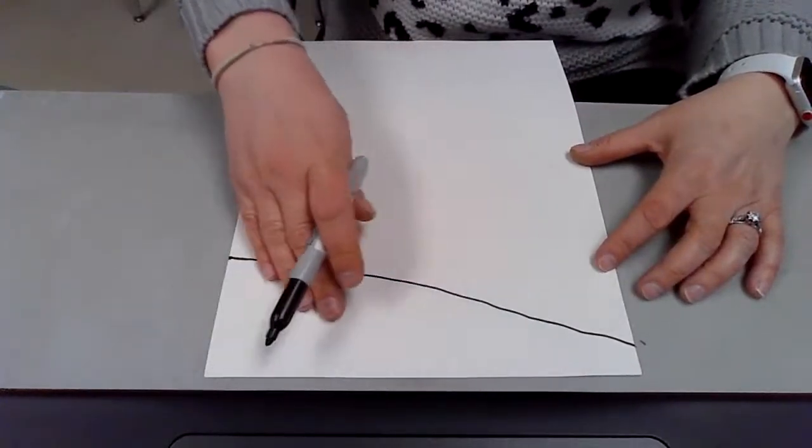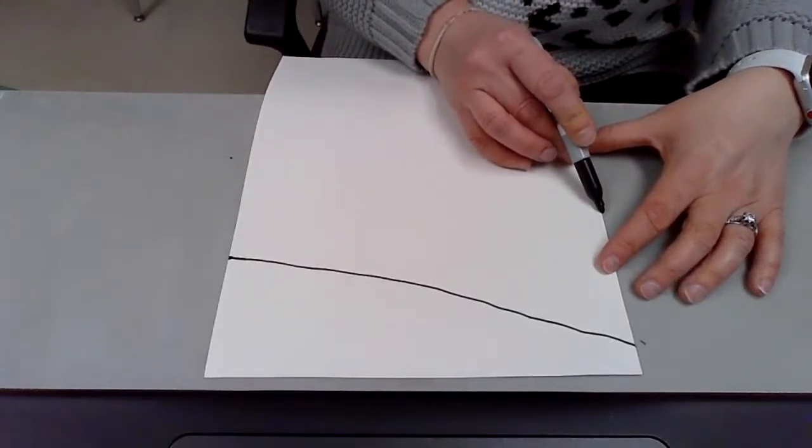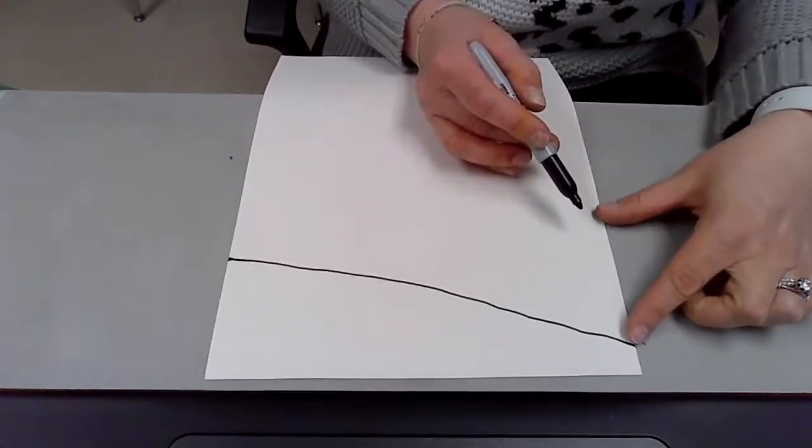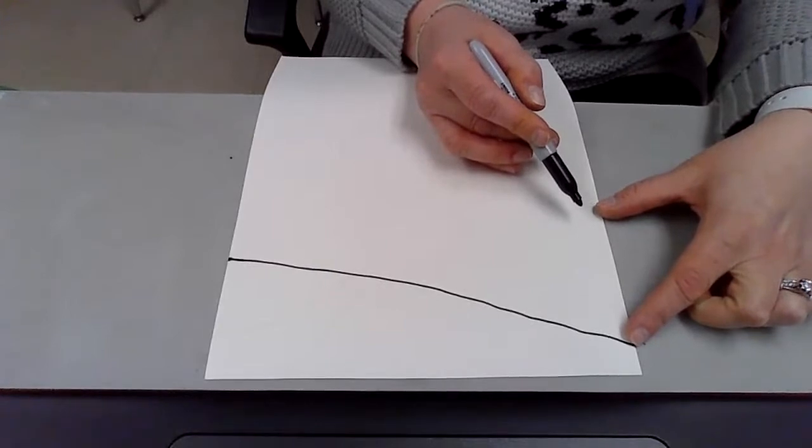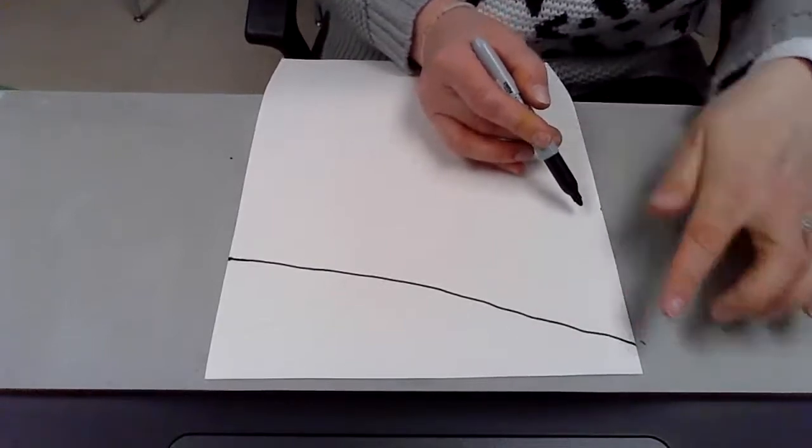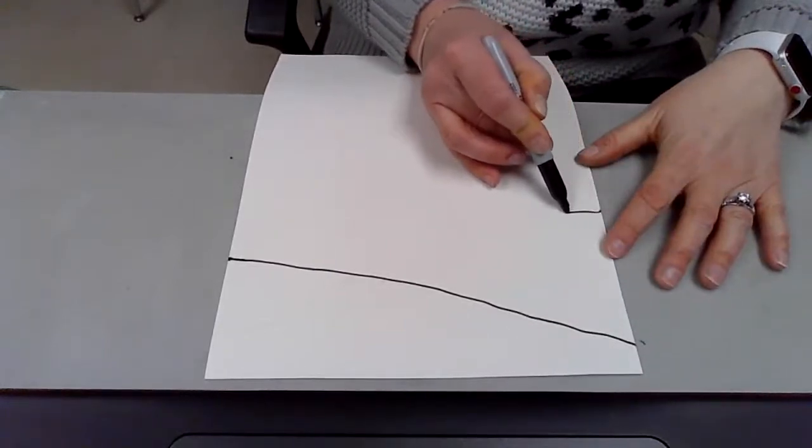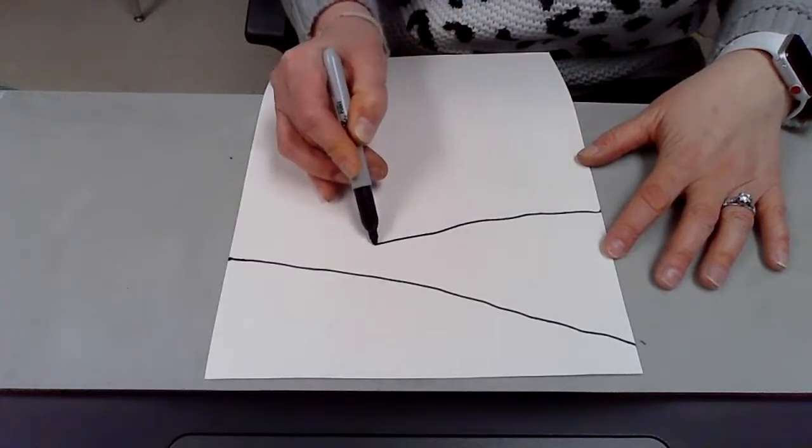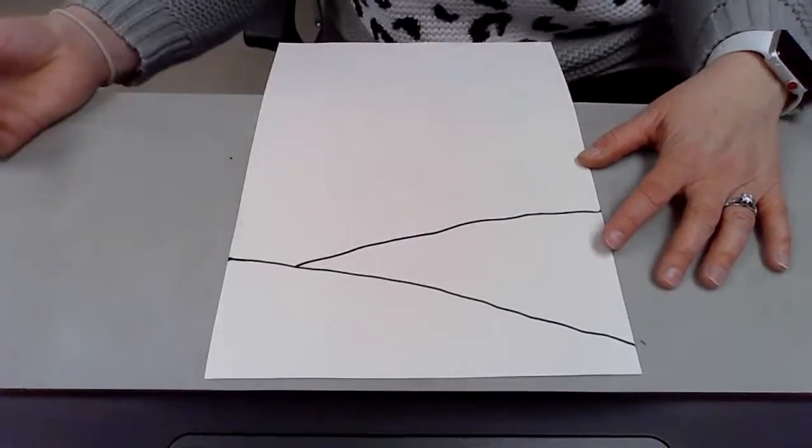That's going to be my foreground area. And then I'm going to bring another line up. This time I'm going about a quarter of an inch or four fingers up from my bottom line, and I'm going to bring that over, slanting it until it touches my first line.